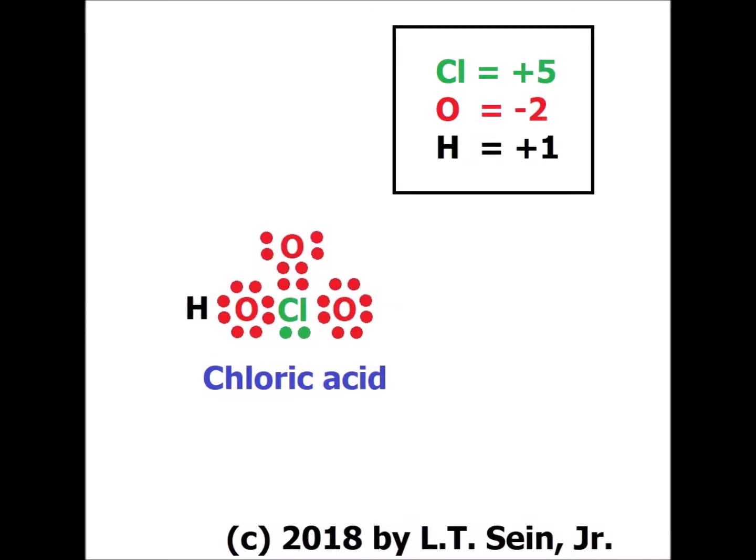Chloric acid has the chemical formula HClO3, and here we have drawn one of several resonance structures for chloric acid, satisfying the octet rule for oxygen and chlorine — and we notice that for chlorine we've actually expanded the octet, which is allowed because chlorine is in the third row of the periodic table. Each of the oxygens brings in six electrons, giving 18; chlorine brings in seven; and hydrogen brings in one, for a total of 26 electrons. When we allocate the electrons, chlorine — which started with seven valence electrons — now has only two, giving it an oxidation number of plus five. Each oxygen now has eight electrons, so the oxidation number for oxygen is minus two. Hydrogen started with one and now has zero, so its oxidation number is plus one.